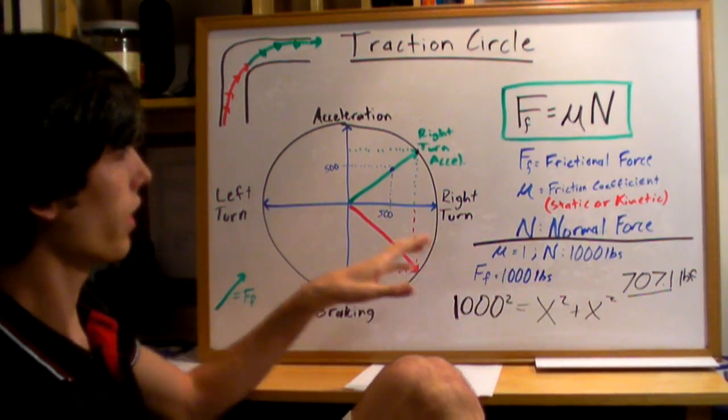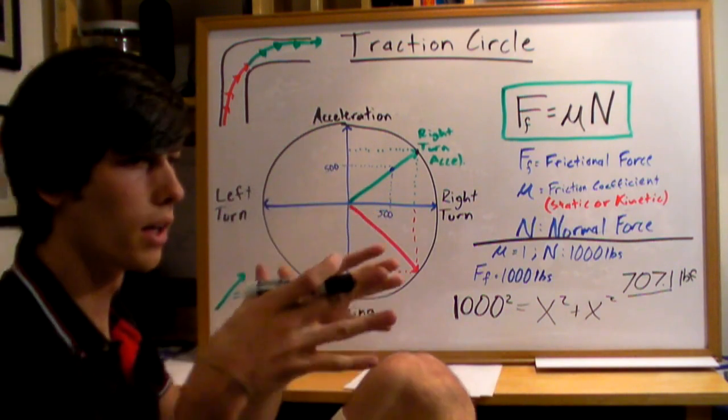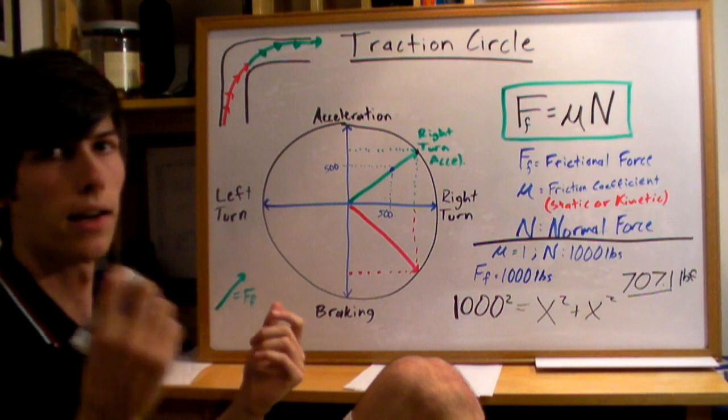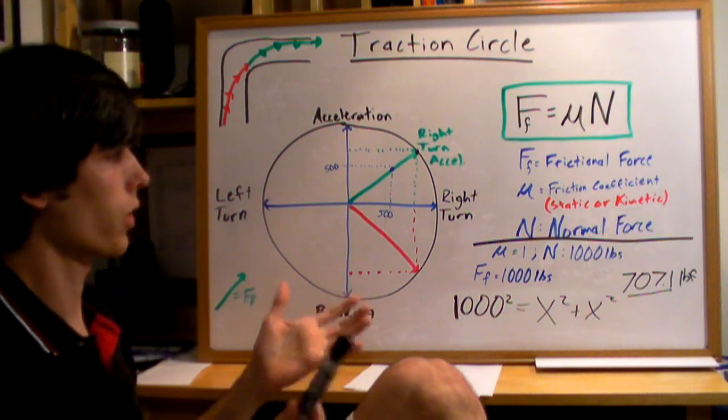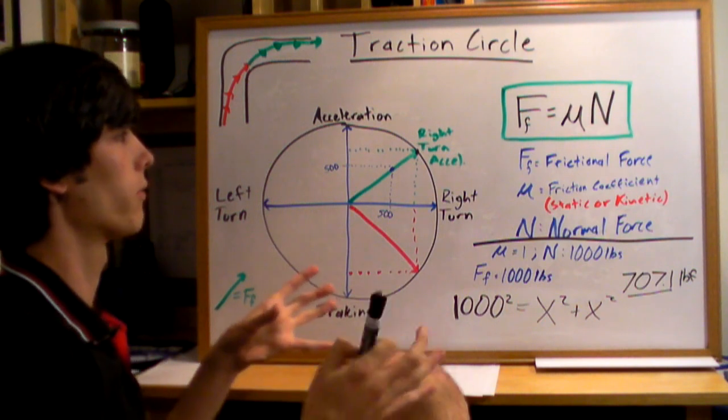You'll have 707 pounds working to accelerate and 707 pounds keeping you on the track. That's what race car drivers are striving to achieve. They want to be right at that boundary using the maximum amount of force that they can.